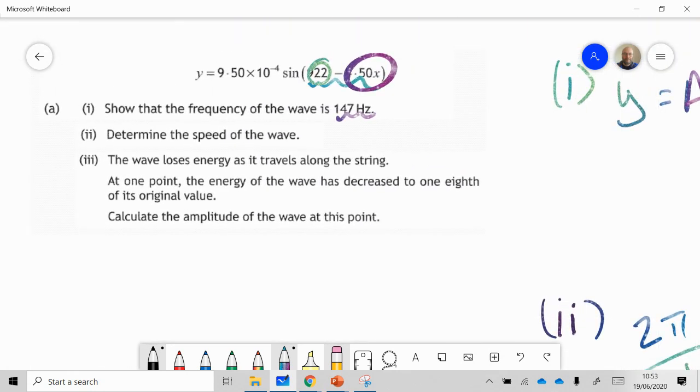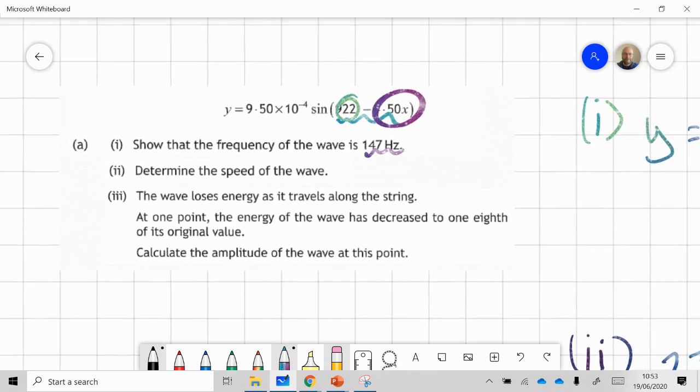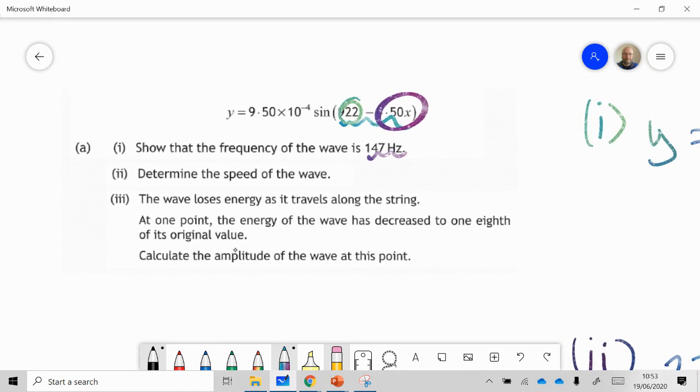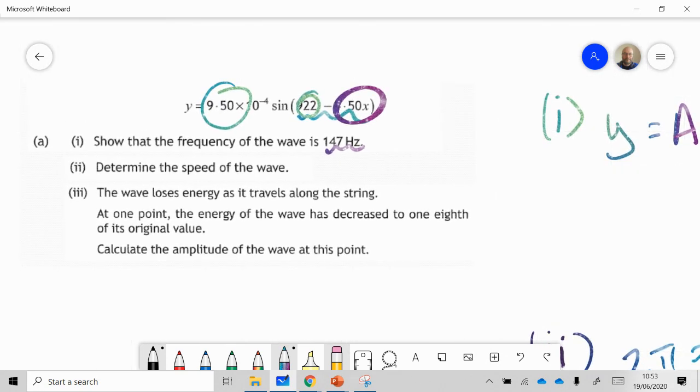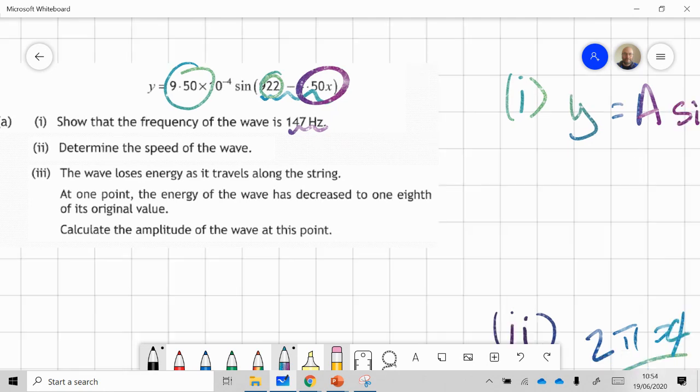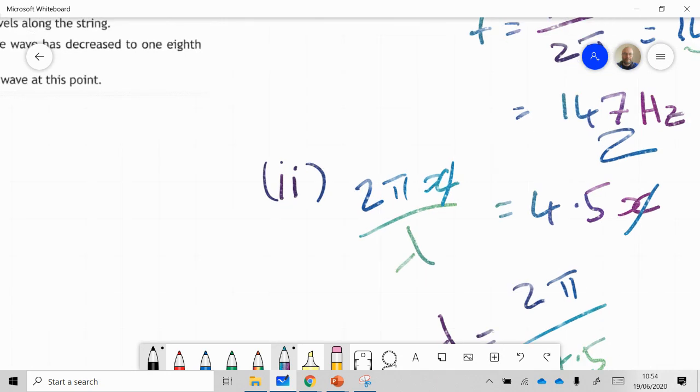The final part: the wave loses energy as it travels along the string. At one point the energy has decreased to one eighth of its original value. Calculate the amplitude of the wave. What is the original amplitude? That's here, it's 9.5. Oh dear, I've just noticed in my worked value I've made a mistake. It's 9.5 × 10⁻⁴, so we'll have to go back and correct that in a minute.